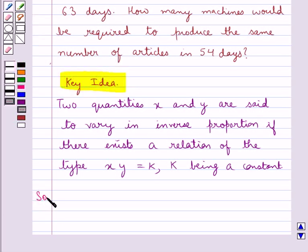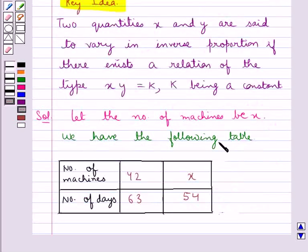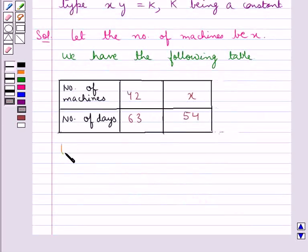Let's move on to the solution. Let the number of machines be x. We have the following table which says that the number of machines produced in 63 days is 42 and we are supposed to find the number of machines produced in 54 days. Let the number of days be represented by y.